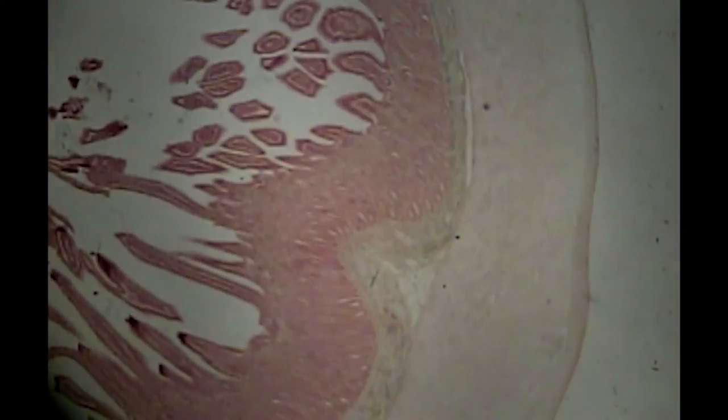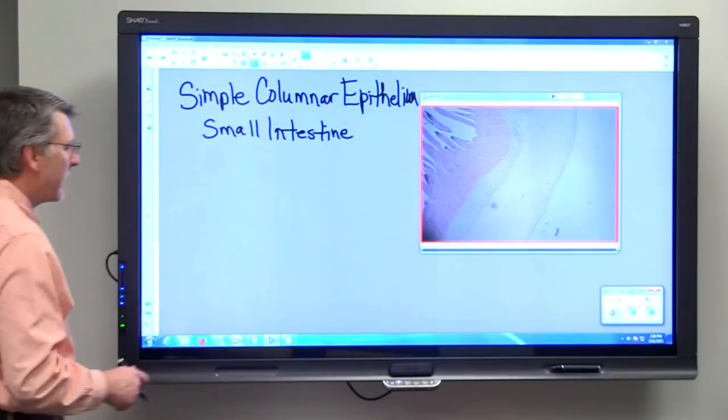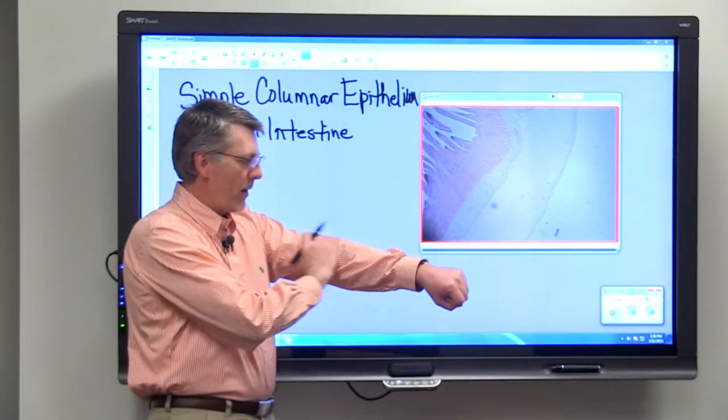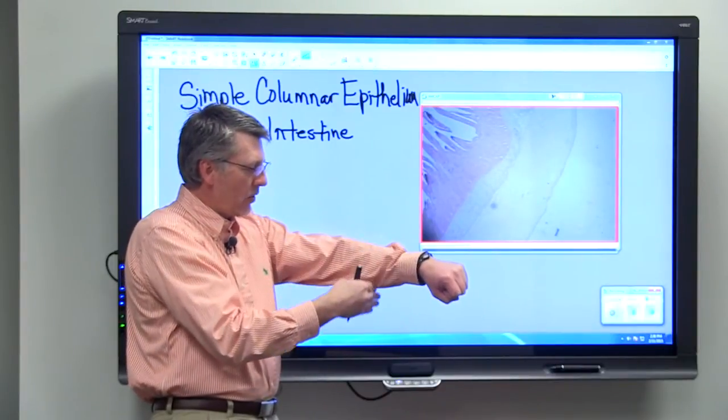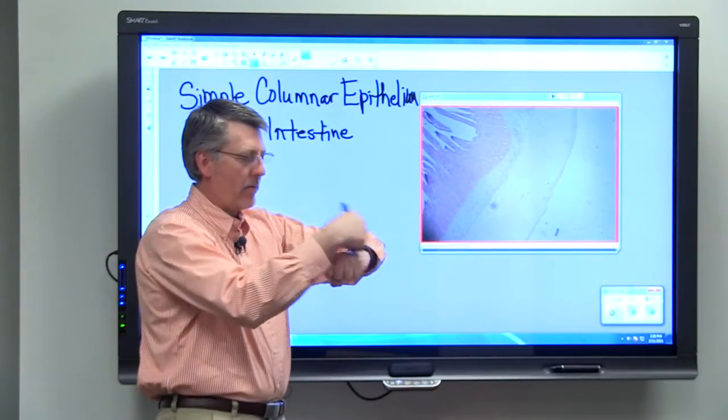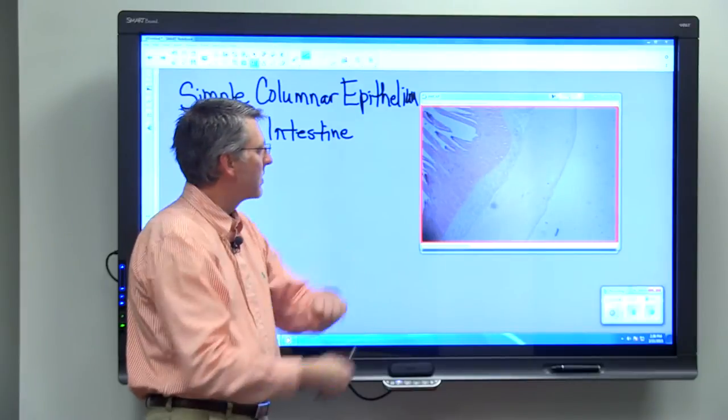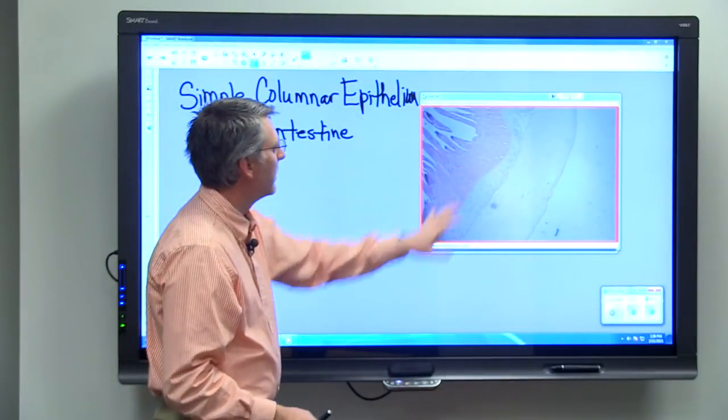On the microscope we have the micrograph of the small intestine. I'm just going to scroll around so you can see that it's a circular structure when we look at it in cross section. If you think about having a tube that's hollow, like my arm, if we cut it crossways and looked at it right at the end, we would see a circle, and that's what we're seeing here.